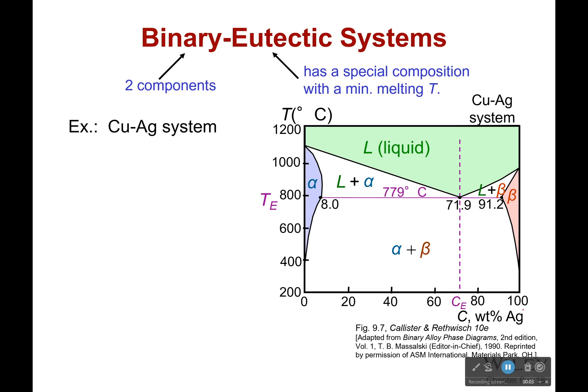We're moving on from copper and nickel to what's called a binary eutectic system. Binary means there's two components still. Eutectic though means that there's a special composition which has a minimum melting point. So it means that if you have this composition, it will actually melt at a lower temperature than if you had either one by itself.